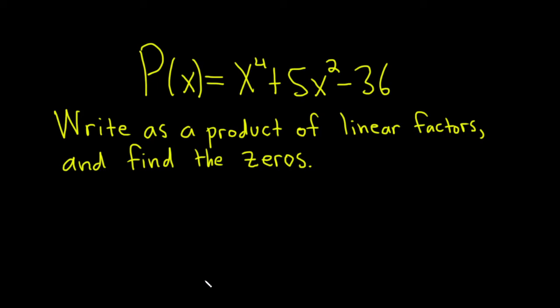Hello, in this problem we have a polynomial P of x equals x to the fourth plus 5x squared minus 36, and we're being asked to write it as a product of linear factors and find the zeros. So let's go ahead and try to do its solution.